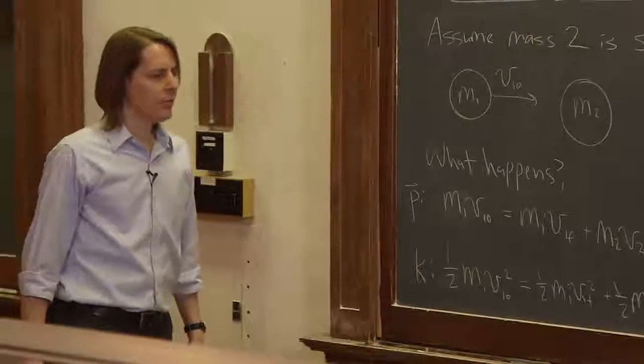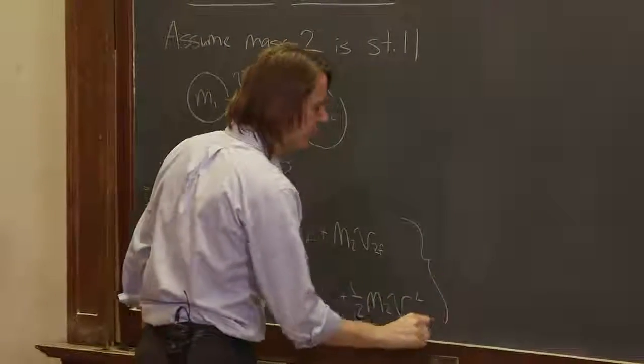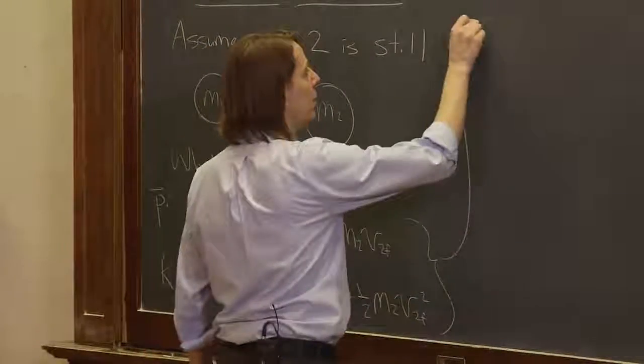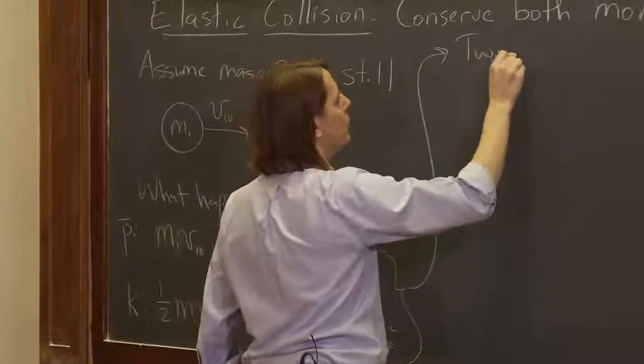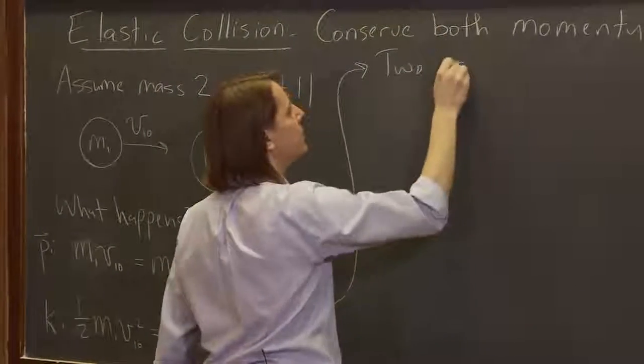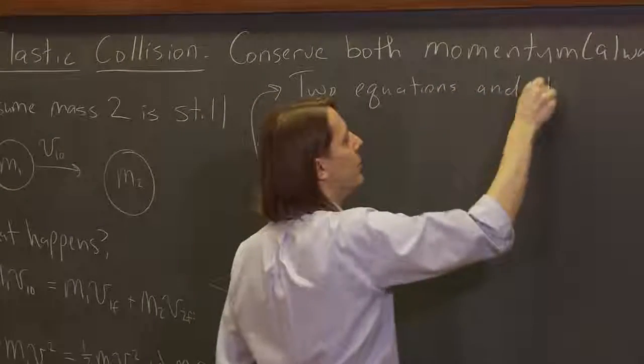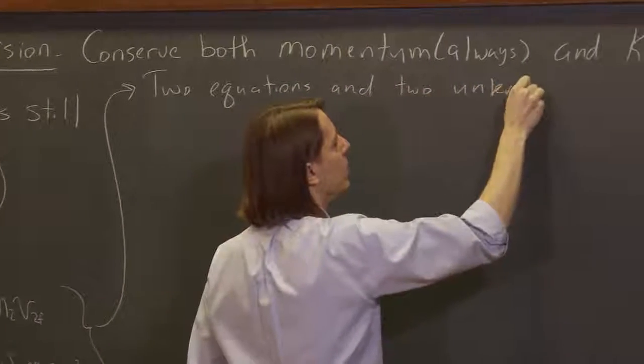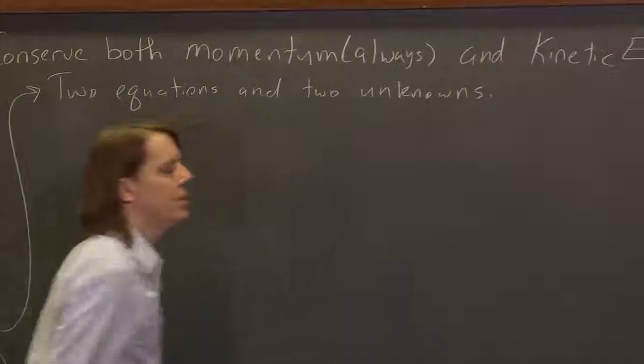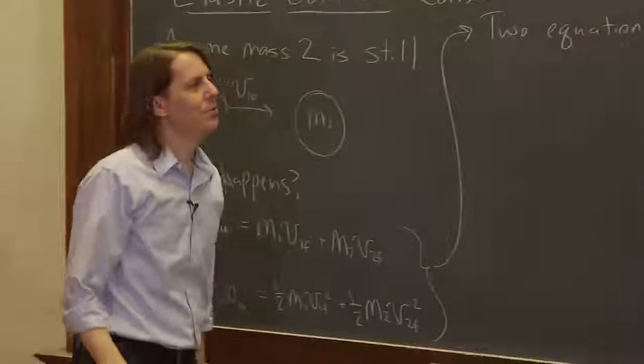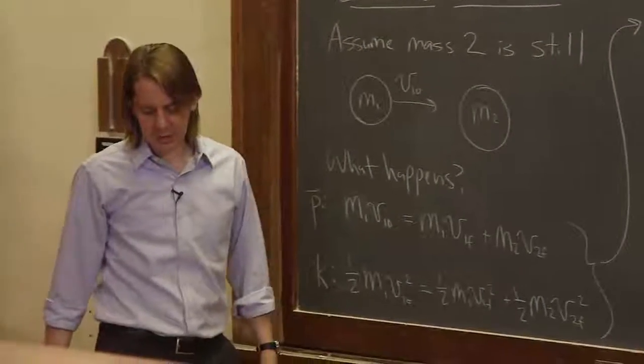All right. So now, in principle, we're in good shape, because what are these? These are two equations and two unknowns. And usually, if you have the same number of equations as unknowns, you can solve for it, and everything is fine, but this is messy.